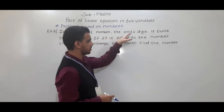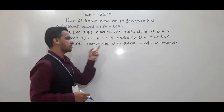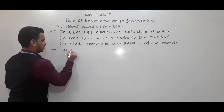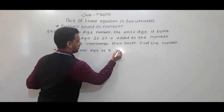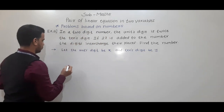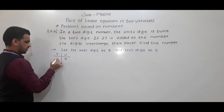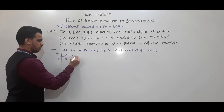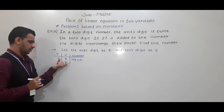The second example: in a two-digit number the units digit is twice the tens digit. If 27 is added to the number, the digits interchange their places. Find the number. So let the units digit be x and the tens digit be y. The number formed is 10y plus x.